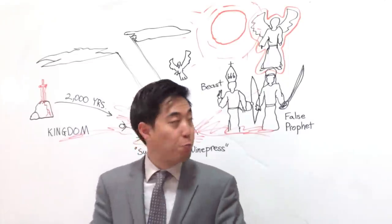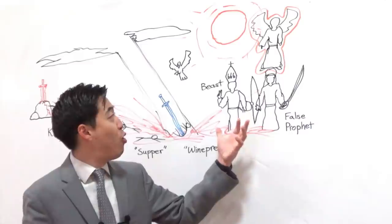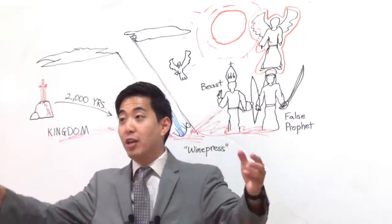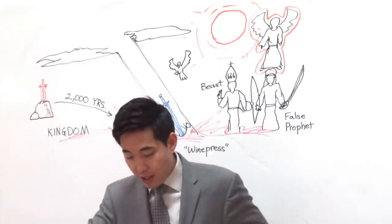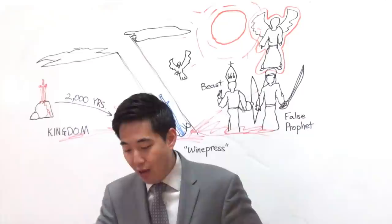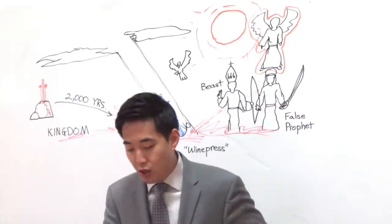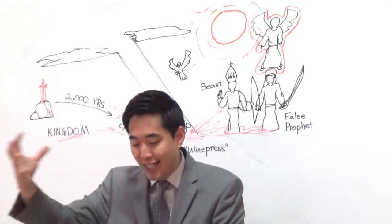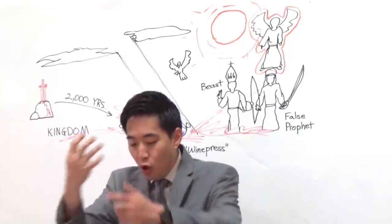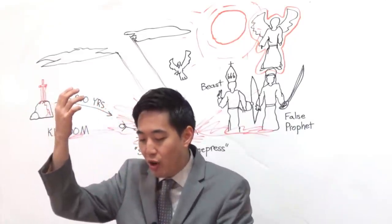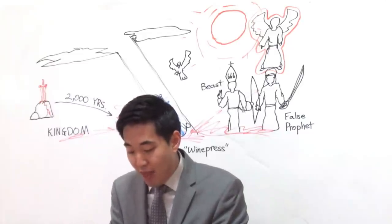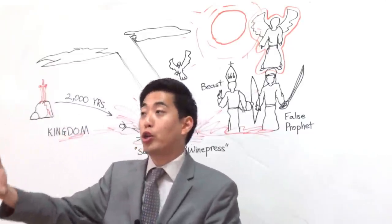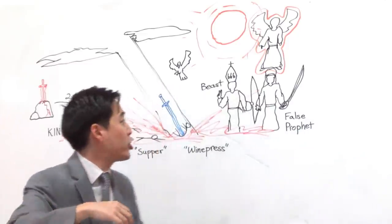So the false prophet, he does miracles before the Antichrist. That way he can prove that, hey, see, this is God. So he used the miracles to deceive the whole world who receives the mark of the beast in their hand or in their forehead. And them that worshipped his image. So those also who worship the beast's image. Remember, he has an image set up.